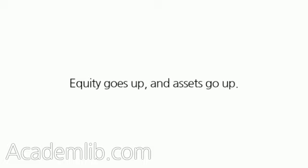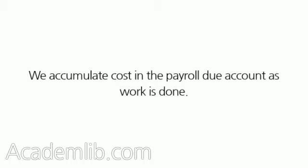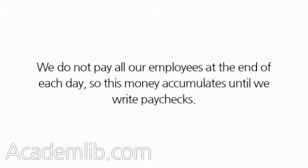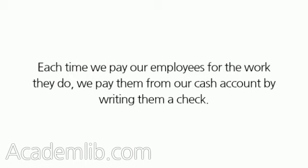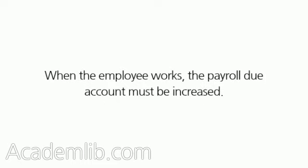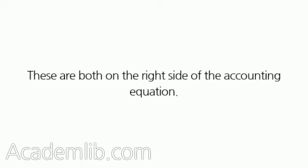Equity goes up and assets go up — this is a good thing, but we are not done yet. We have to pay money to do the project. We accumulate cost in the payroll due account as work is done. We do not pay all our employees at the end of each day, so this money accumulates until we write paychecks. We first make entries in payroll due that will eventually total $200,000. Each time we pay our employees, we pay them from our cash account by writing them a check. When the employee works, the payroll due account must be increased, and the second entry to balance the equation reduces the equity account. These are both on the right side of the accounting equation.